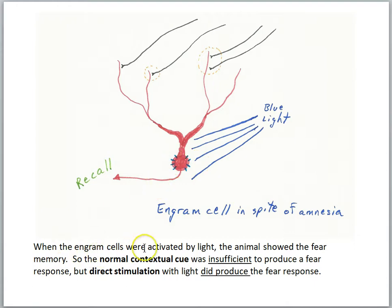So when the engram cells were activated by light, the animal showed the fear memory. So the normal contextual cue was insufficient to produce the fear response, but direct stimulation with the light did produce the fear response.